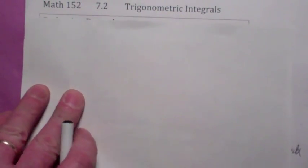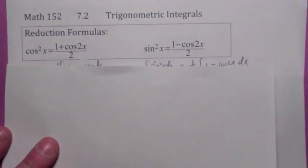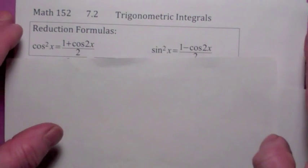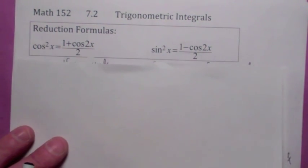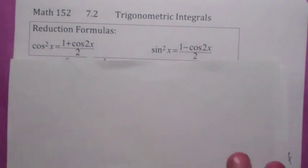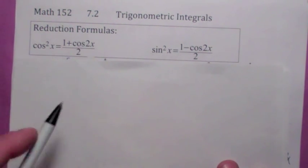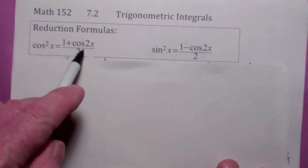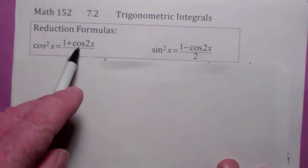Before we get into the trigonometric integrals, let's talk about the reduction formulas. We use these a lot as well. The reason they're called reduction formulas is because we're reducing the powers. Notice here you have a cosine squared, and here you don't have a squared. When you're integrating, it's much easier to integrate the reduced form because you can do it with a u-substitution.